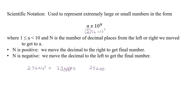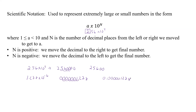If n is negative, we move the decimal to the left to get the final number. So say we have 1.278 times 10 to the negative 6. We write some numbers on the front: 1, 2, 3, 4, 5, 6, then 1, 2, 7, 8. This is our initial number, 1.278 times 10 to the minus 6. We move it to the left six places: 1, 2, 3, 4, 5, 6. So our answer is 0.000001278. That's the actual number this represents in scientific notation.